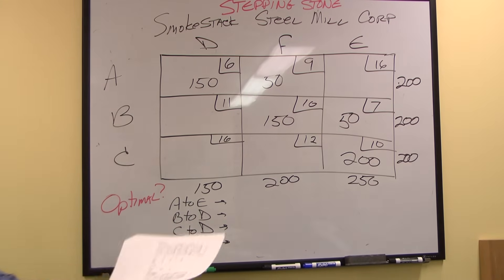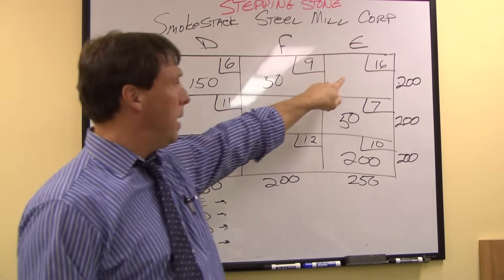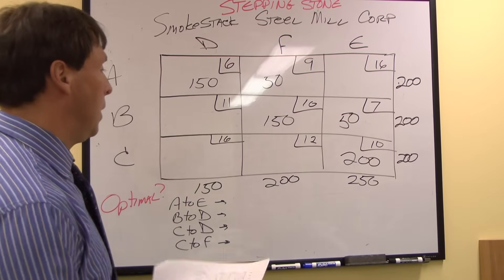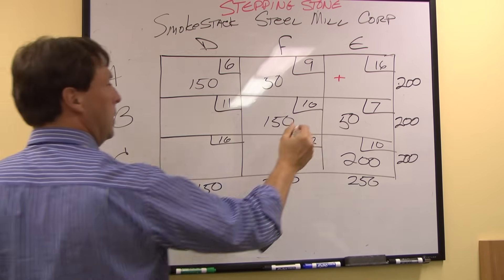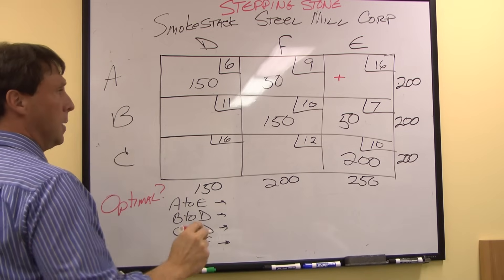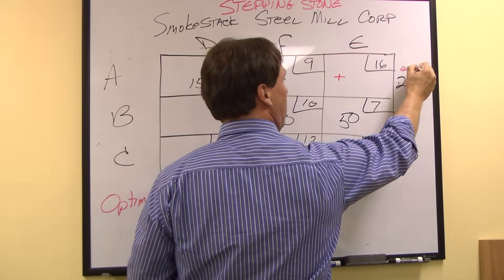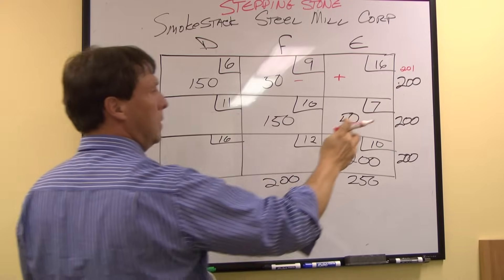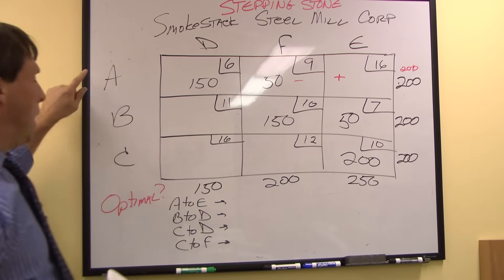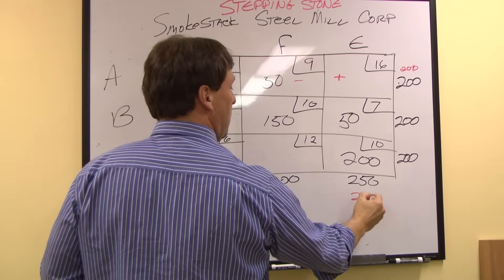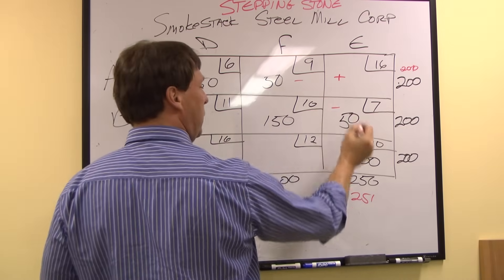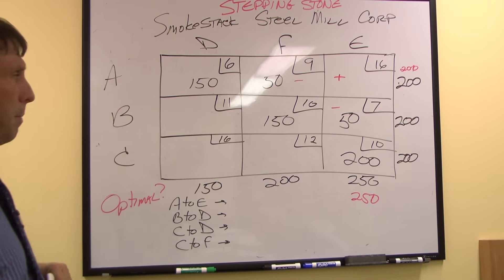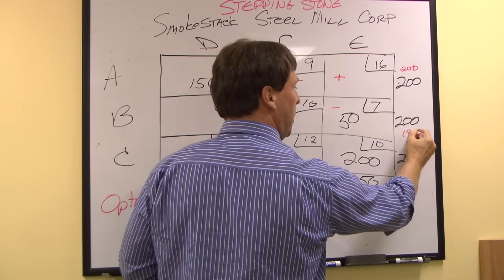The first one I'm going to check is shipping from Anaheim to Elizabeth, or A to E. I want to check to see if I put one unit in there if I could lower my shipping cost. But if I add one unit to Elizabeth, this becomes 201. So I'll have to take one unit away to keep my supply from Anaheim constant. By adding one unit, I've gone to 251, so I have to take one unit away so my demand is constant. I've taken one unit away, I made this 199.